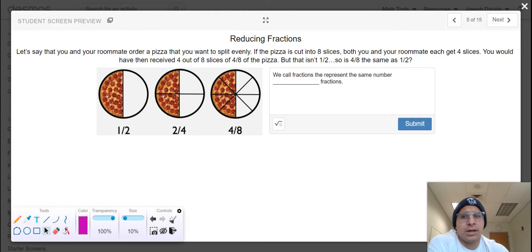Let's say that you and your roommate have decided to order pizza and want to split it evenly. If the pizza is cut into eight slices, both you and your roommate each get four slices. You would have then received four out of eight slices or four divided by eight of the pizza, but that isn't one half. So is four eighths the same as one half? Well, in the event that you've gotten to this point of your life and you're still kind of like nope, those aren't the same, well I got news for you they are and they're known as equivalent fractions.